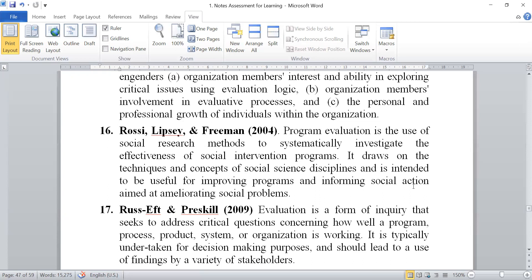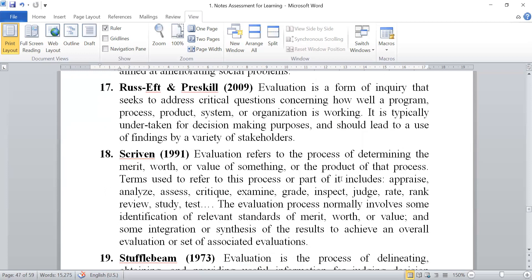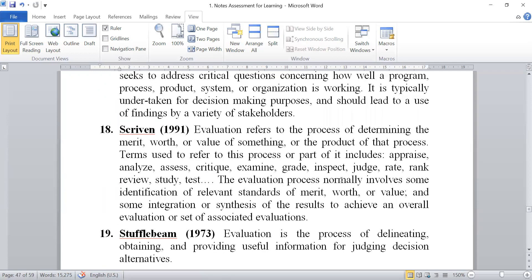Next definition given by Rossi, Lipsey and Freeman 2004, program evaluation is use of social research methods to systematically investigate the effectiveness of social intervention programs. It draws on the techniques and concepts of social science disciplines and is intended to be useful for improving programs and informing social action aimed at ameliorating social problems. According to Rossi, Lipsey and Freeman 2009, evaluation is a form of inquiry that seeks to address critical questions concerning how well a program, process, product, system, or organization is worked. It is typically undertaken for decision making purposes and should lead to use of findings by a variety of stakeholders.